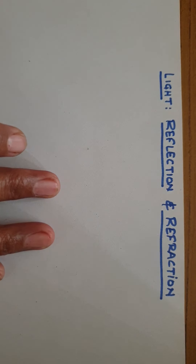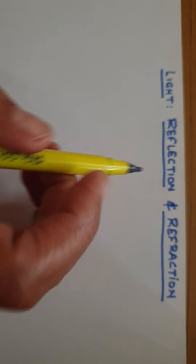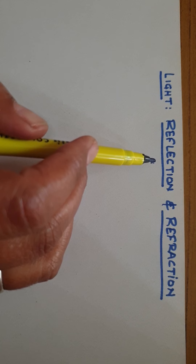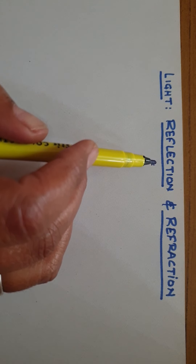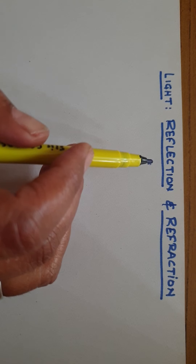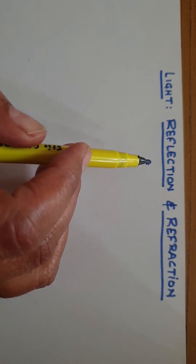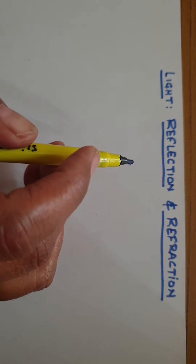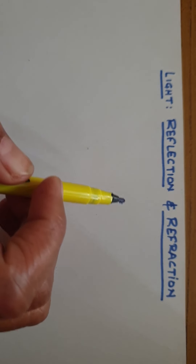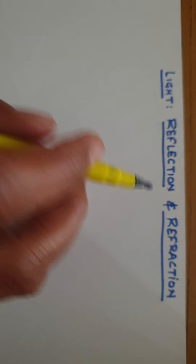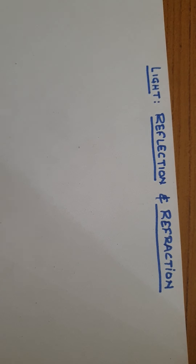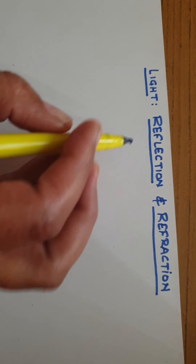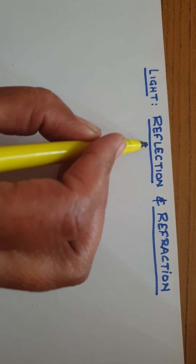Today we will study about the phenomena of reflection of light using the straight line propagation of light. The next topic will be the law of reflection, and the next one will be properties of image formed by a plane mirror. Now let us study about reflection.